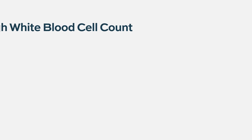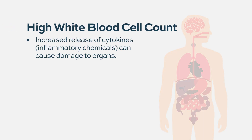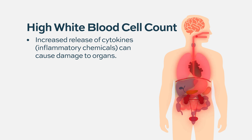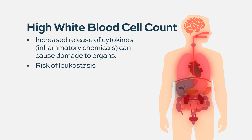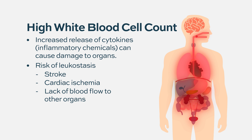A high white blood count in AML is typically a worse thing than a low white blood count, because there is the potential for increased release of cytokines or inflammatory chemicals that can cause damage to various organs such as the kidneys. There's also the potential risk of something called leukostasis if the white blood count is too high, where leukemic blast cells accumulate and clog up the blood vessels, which can lead to problems such as a stroke or cardiac ischemia — lack of blood flow to the heart and other organs.